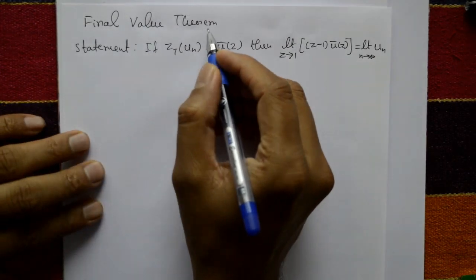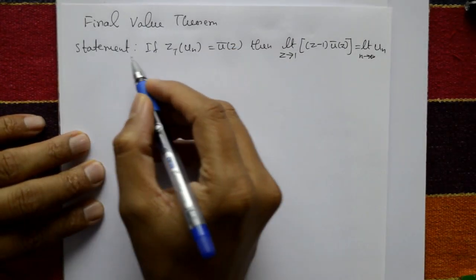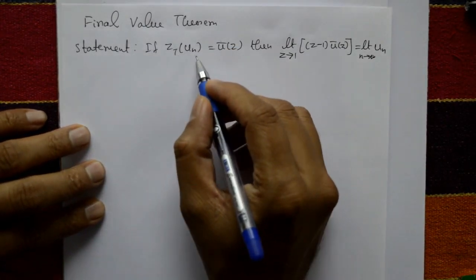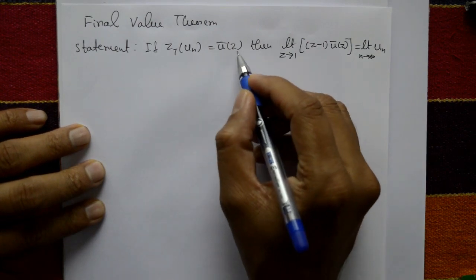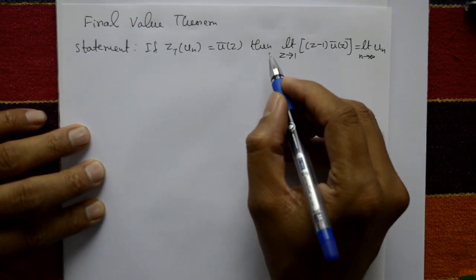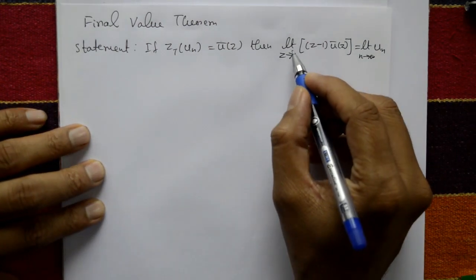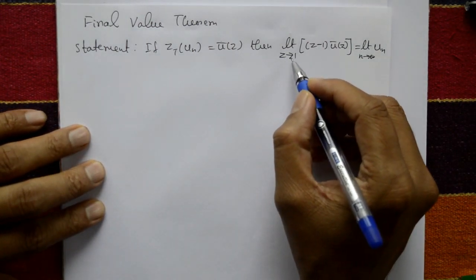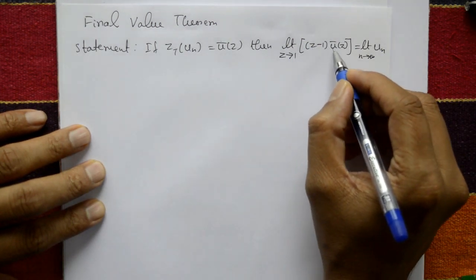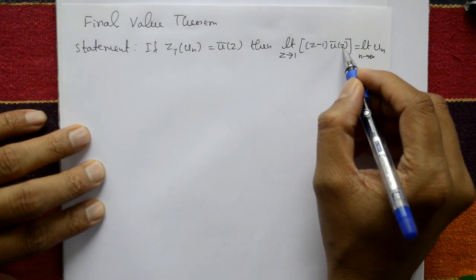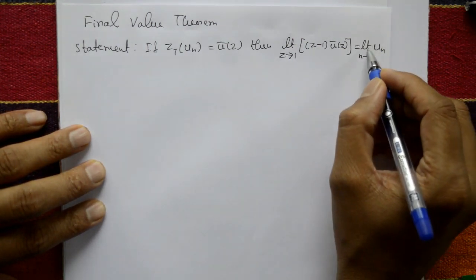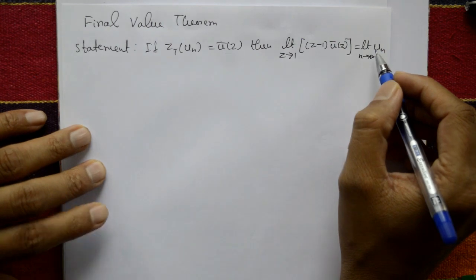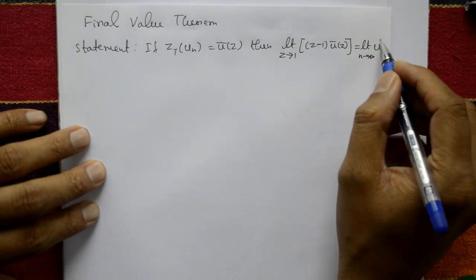Final Value Theorem statement: if the Z-transform of u[n] is equal to ū(z), then limit as z tends to 1 of (z minus 1) times ū(z) is equal to the limit as n tends to infinity of u[n]. We will now prove this.